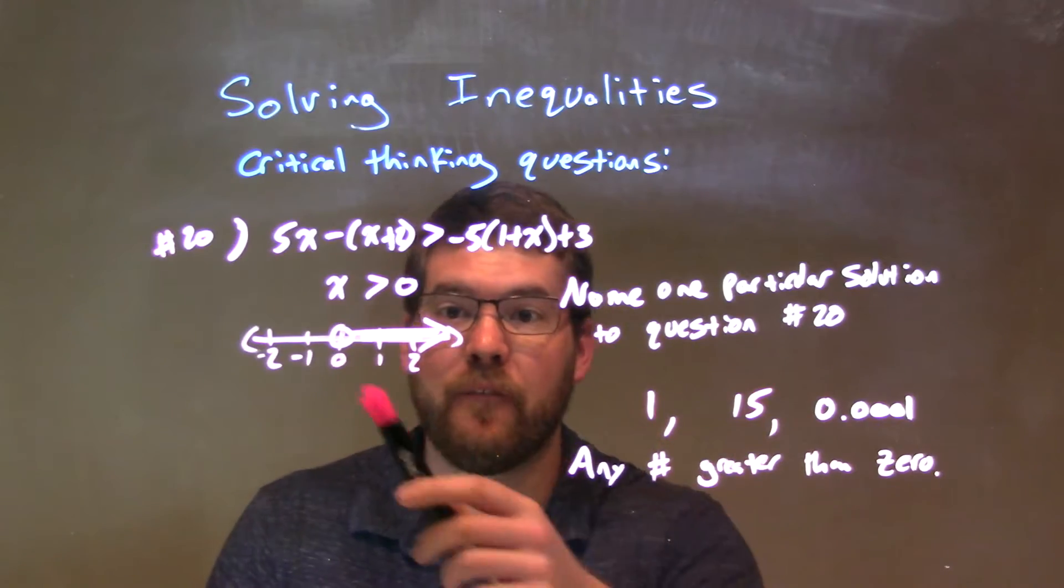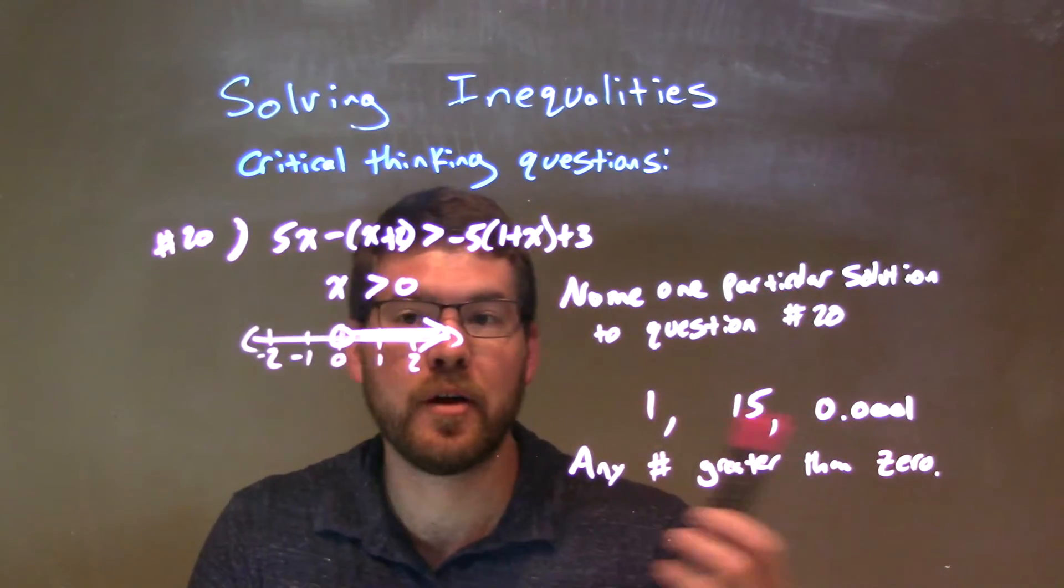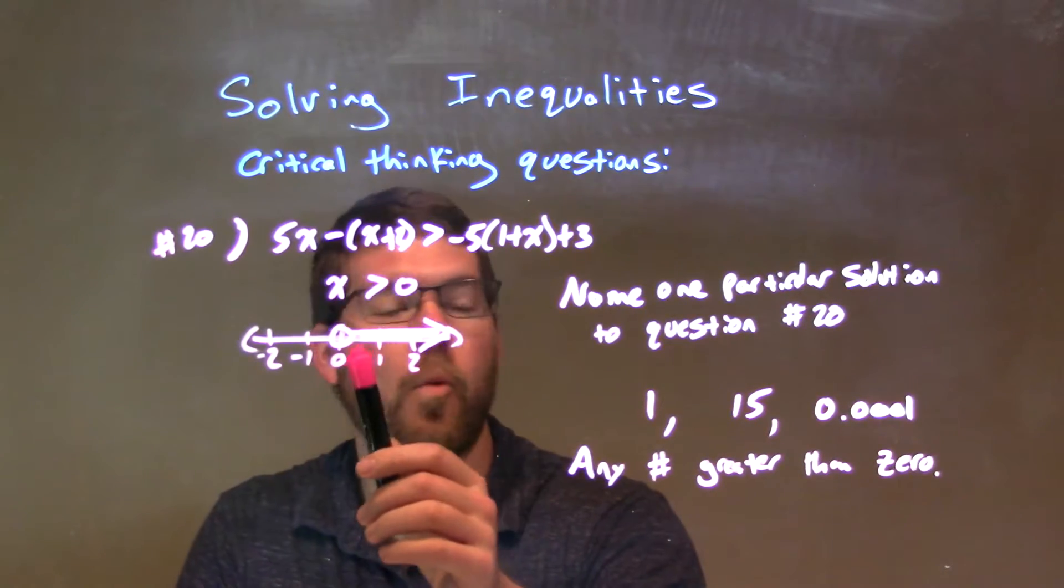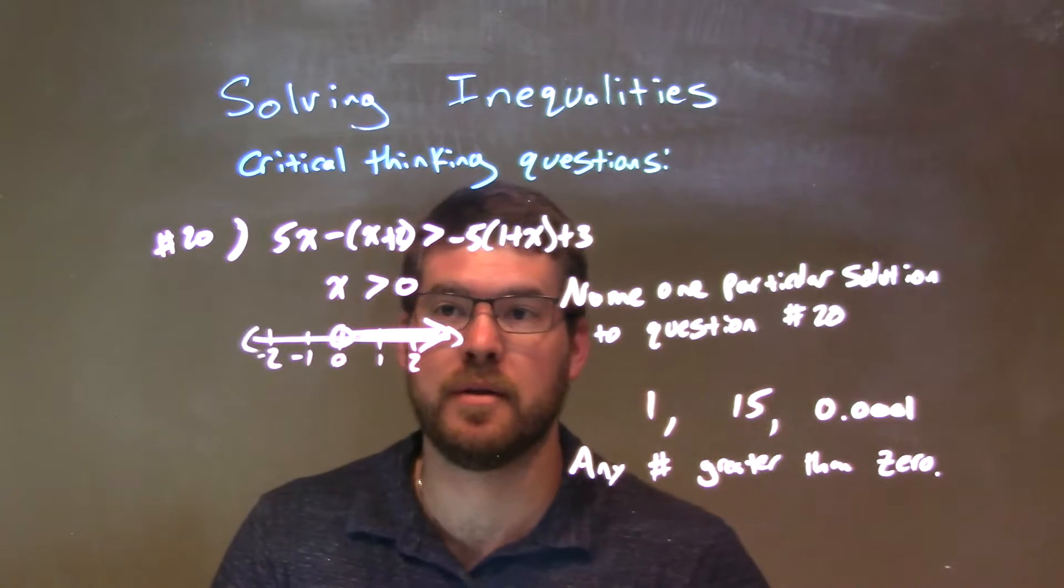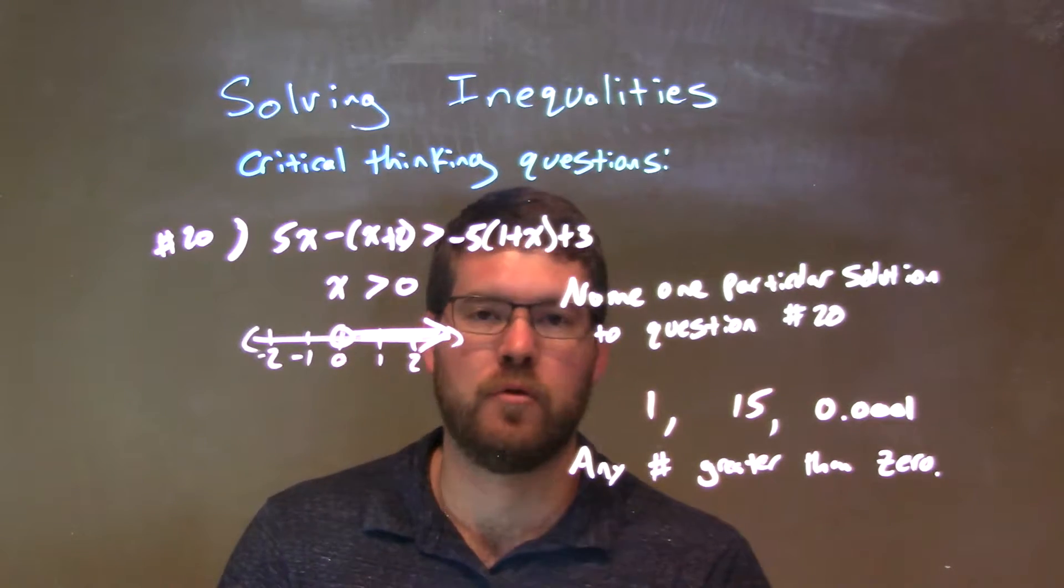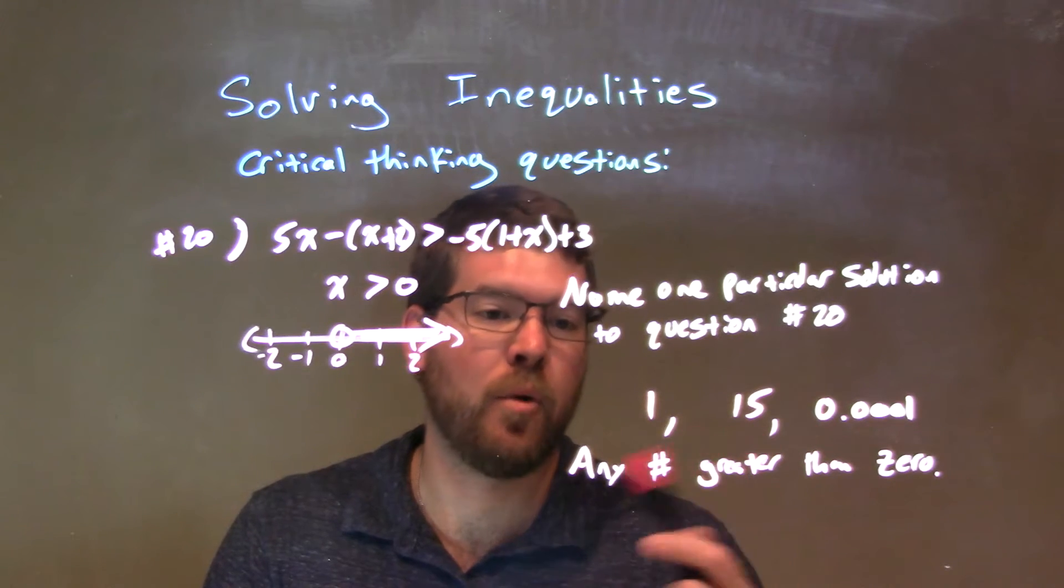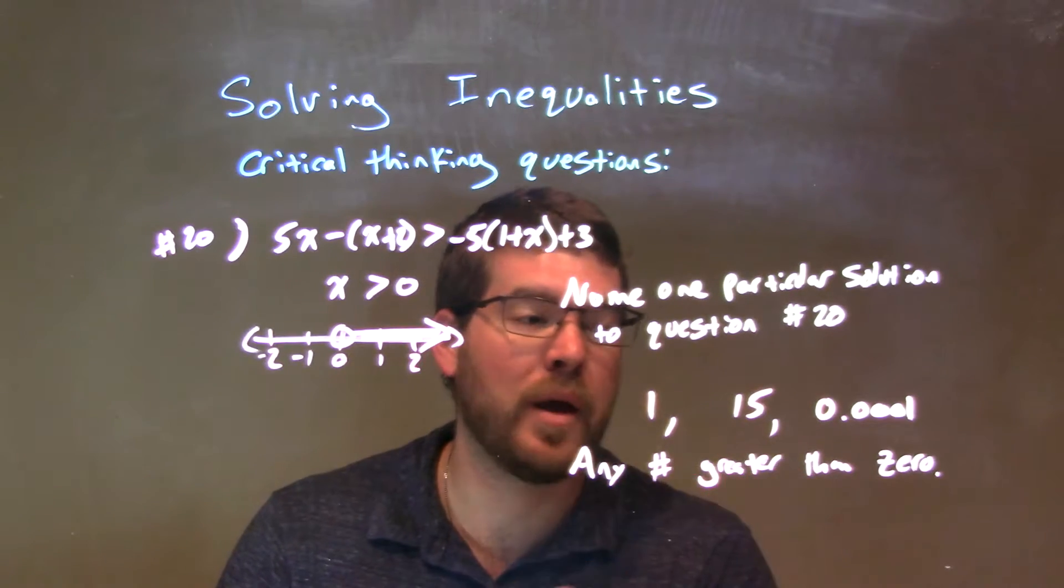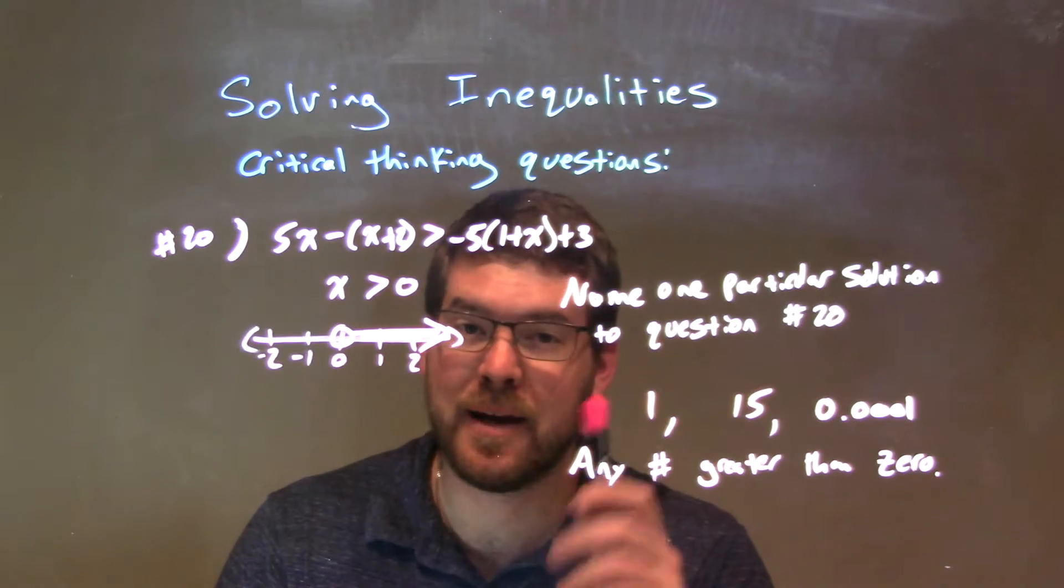Well, any number that's greater than 0 would be a solution, so you can pick 1, you can pick 15, or you can pick 0.0001. Again, a possible solution, just name any number that's greater than 0, but not equal to 0.